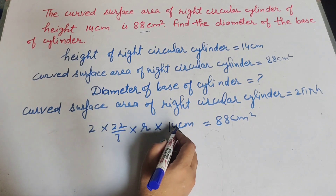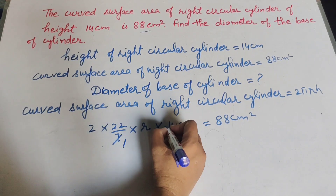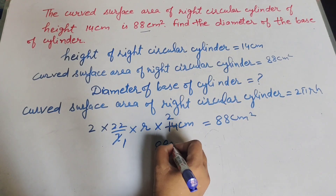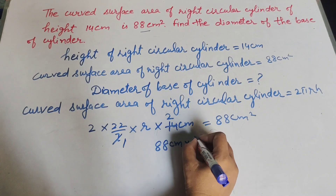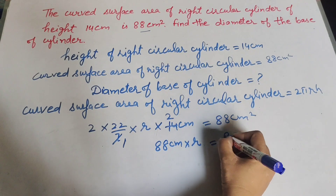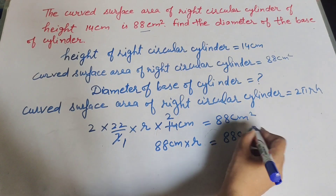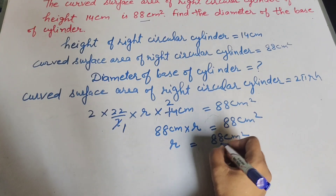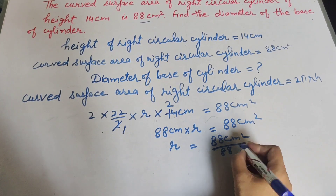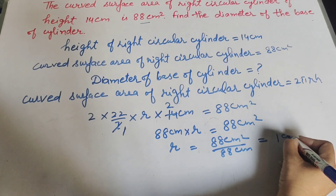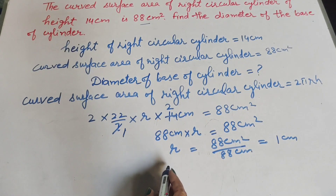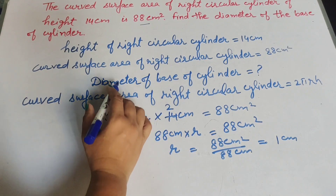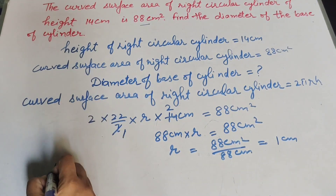7 and 14 are both cancelled as multiples of 7. So 2 × 22 × 2 = 88, giving us 88r = 88 cm square. Transposing to the right hand side, r = 88 ÷ 88 = 1 cm. So the radius of the base of the cylinder is equal to 1 cm.